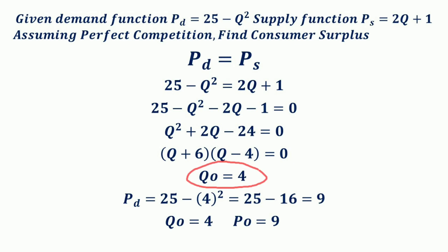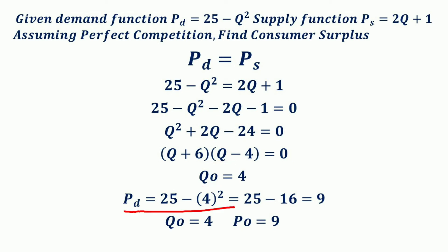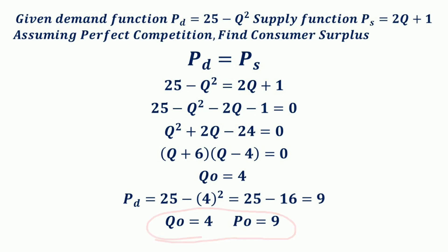After getting Q₀ = 4, we substitute Q = 4 into the demand function. PD = 25 minus 4² = 25 minus 16 = 9. Therefore the equilibrium quantity is 4 and the equilibrium price is 9.